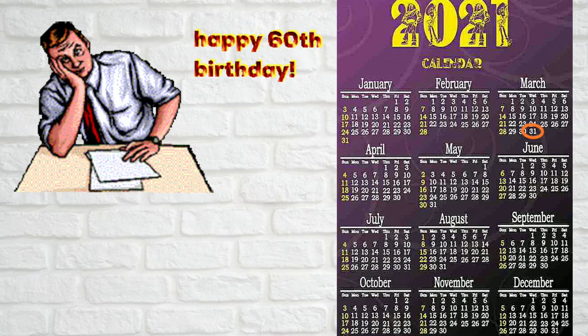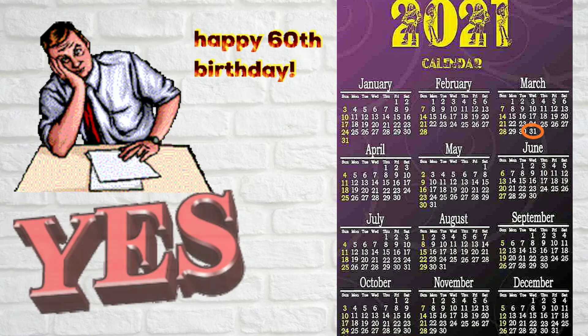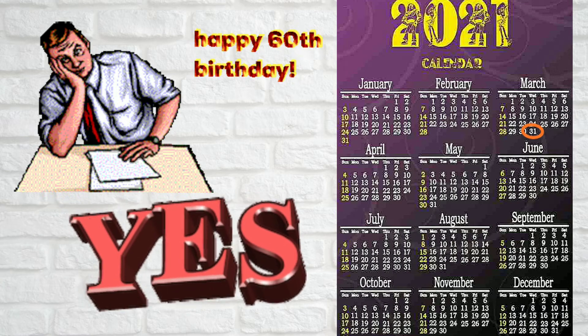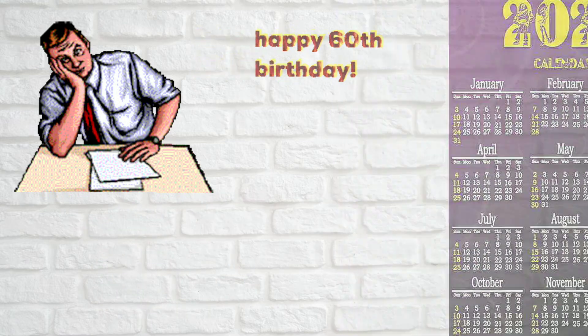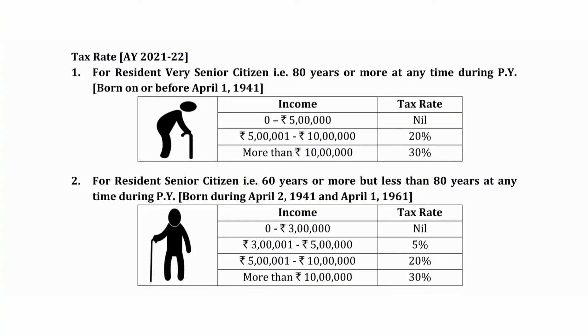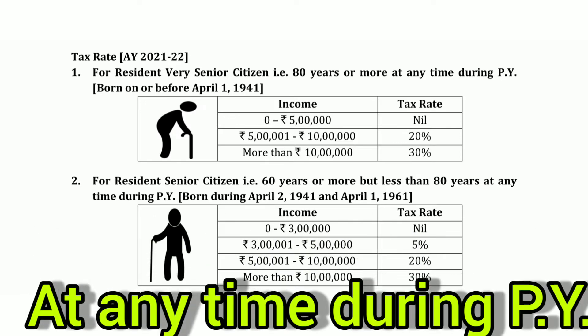So agar Mr. X hai and he is 60 years on 31st March 2021, then kya woh eligible hoga to become a senior citizen? Toh iska answer aata hai — yes, he is eligible to become a senior citizen. Kyunki Income Tax Act mein bola hai: if he attains the age of 60 years at any day during the previous year, then he is eligible to become a senior citizen.